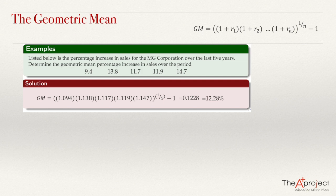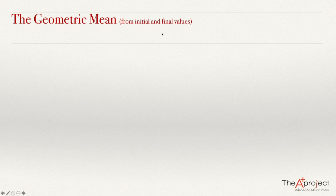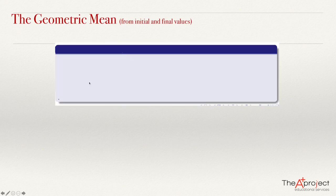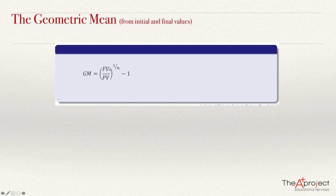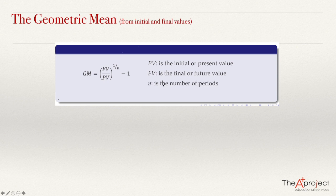There are situations when we have only the final value and the initial value of the variable. In this case, we use a different formula — the one used in financial math to get the rate of interest. The geometric mean percent increase equals the future value divided by the present value, raised to the power 1 over n, minus 1. Here Pv is the initial or present value, Fv is the final or future value, and n is the number of periods.